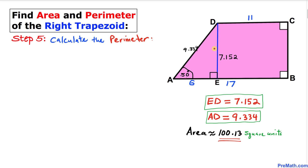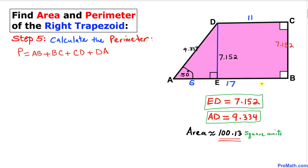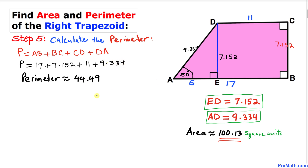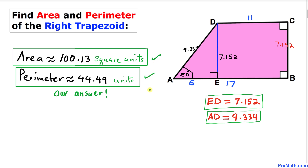Now let's calculate the perimeter. We know ED equals BC, so BC is also 7.152. The perimeter is simply the total boundary length: Perimeter = AB + BC + CD + DA = 17 + 7.152 + 11 + 9.334, which adds up to approximately 44.49 units. That is our final answer — thanks for watching and please subscribe to my channel for more videos.